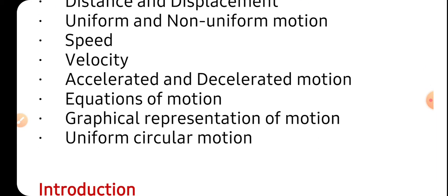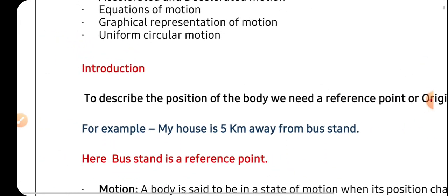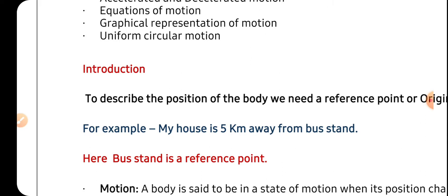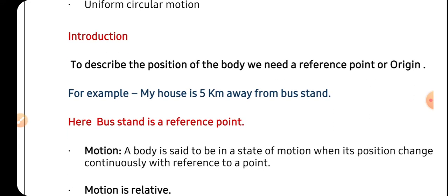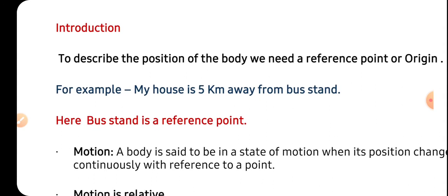Let us start with the first, that is introduction part. When we describe a body's motion, first we need to tell its position, that is the reference point. To describe the position of the body, we need to find a reference point. Reference point is an example, like where the body starts from, the reference we take. For example, my house is five kilometers away from a bus stand. That bus stand is my reference point, from where my location is five kilometers away. That is the origin. It starts from the bus stand and ends at my house. So bus stand is the reference point.